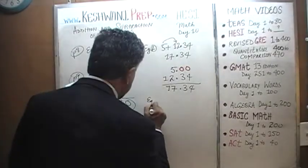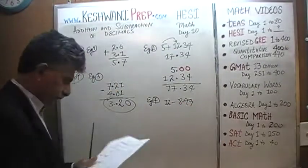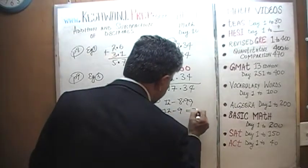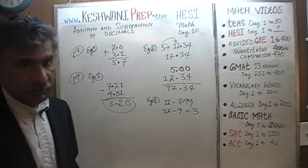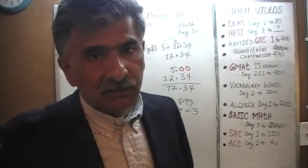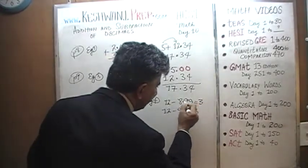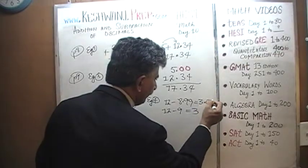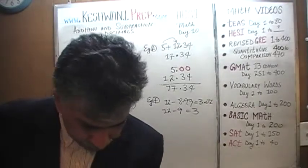Example number 4: 12 minus 8.99. We know that 12 minus 9 is exactly 3. So since it is 8.99 and not 9, this quantity is going to be 3 plus an extra 0.01. We need to actually do it out to get the precise answer.